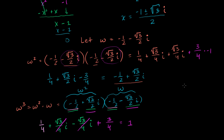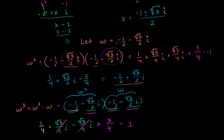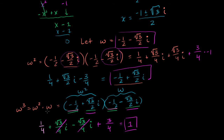So omega cubed equals 1, which confirms it's a cube root of unity. Omega squared is its conjugate. What's omega to the fourth power? It's omega cubed times omega, which is just omega again. Omega to the fifth is omega squared, omega to the sixth is 1 again. The powers cycle with period 3. We'll use this pattern to tackle the probability part of the problem in the next video.